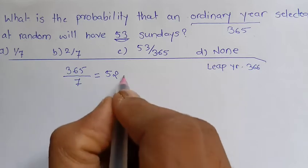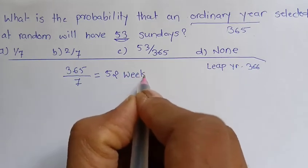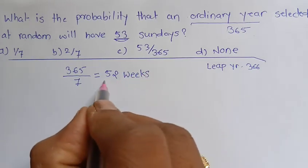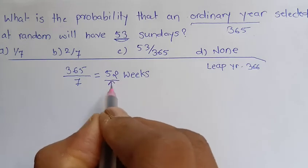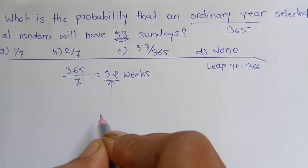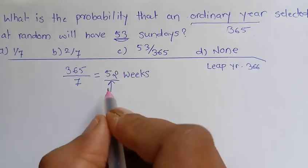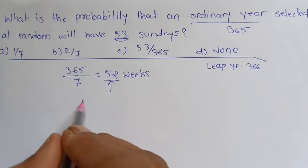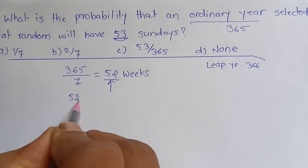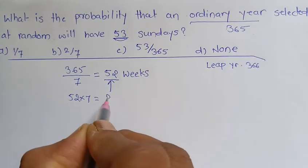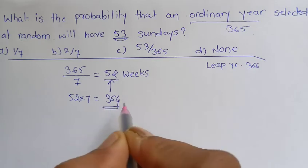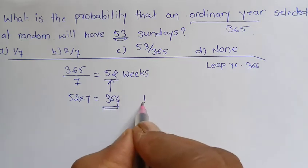Now 52 weeks means we will be having all the days 52 times, like Sunday, Monday, Tuesday till Saturday, we'll have all the days 52 times. But one day is remaining. See, if I multiply 52 by 7, so I will be having 364 days, so one day is extra.